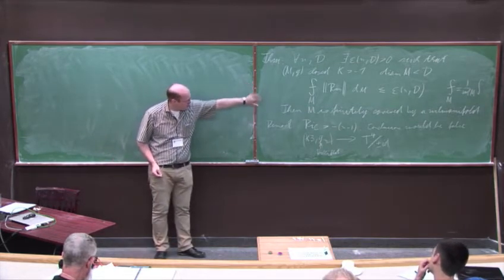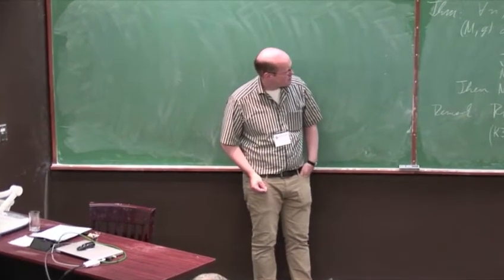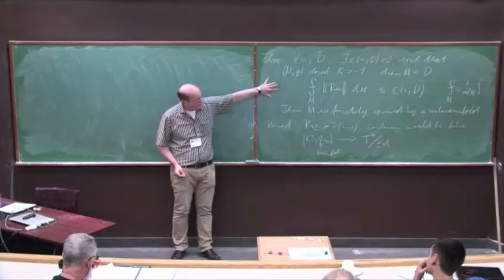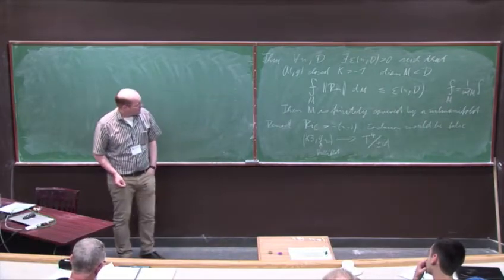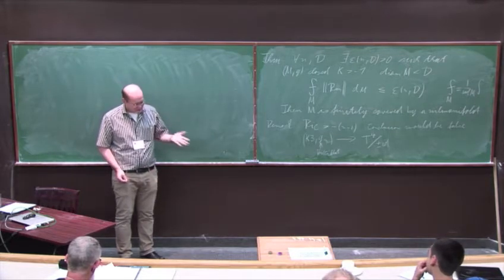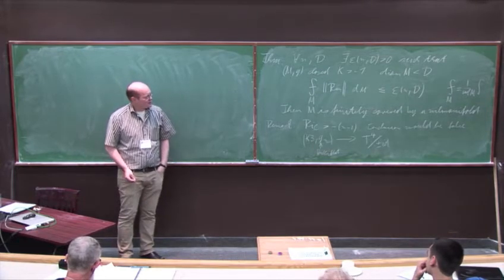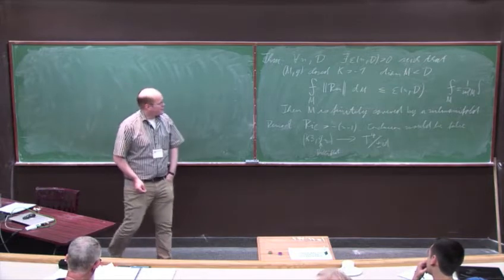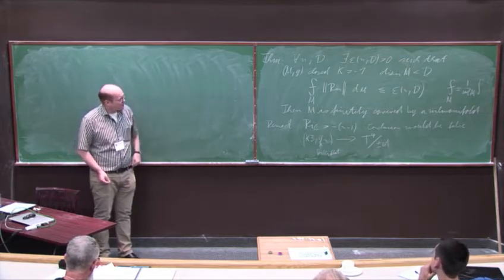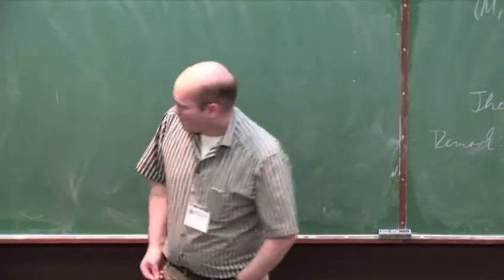One reason why we are interested in this is we would like to understand a question related to a question of John Lott. If you have a manifold of almost non-negative sectional curvature, when does it admit a metric of positive scalar curvature? The expected result is: it either admits a metric of positive scalar curvature, or the manifold is actually a flat fiber bundle. That's sort of what we think it should be, though it's not entirely clear why this is related.